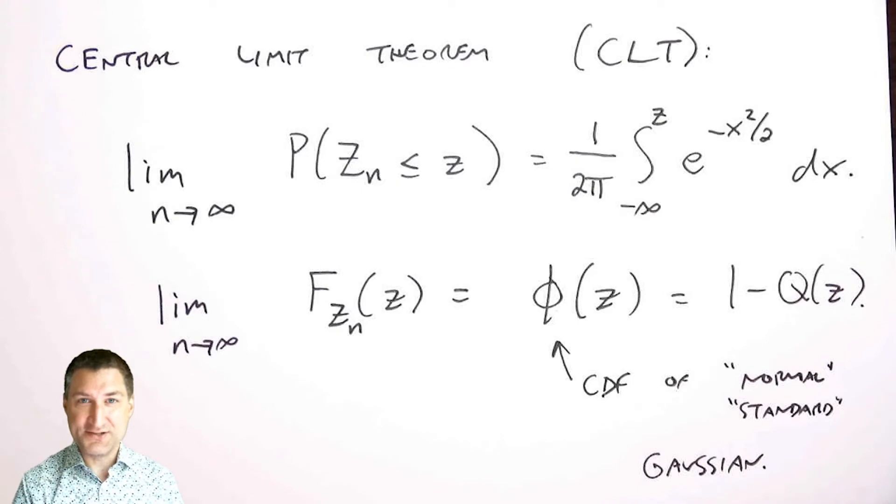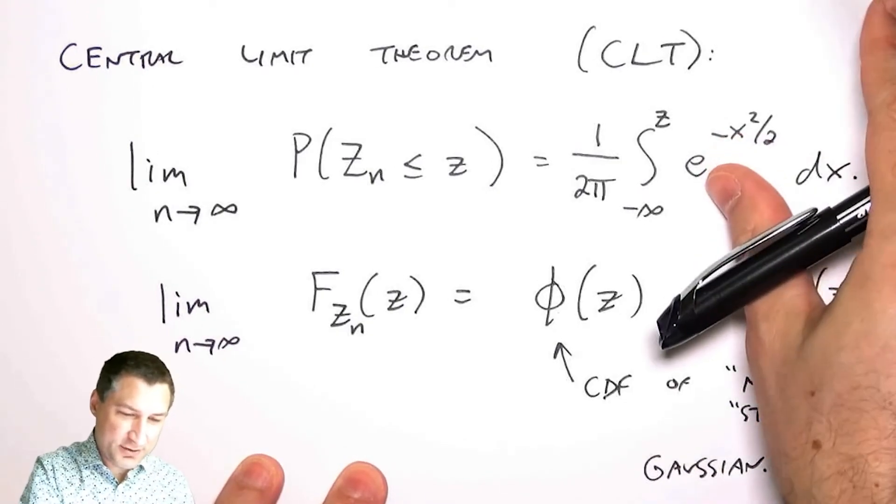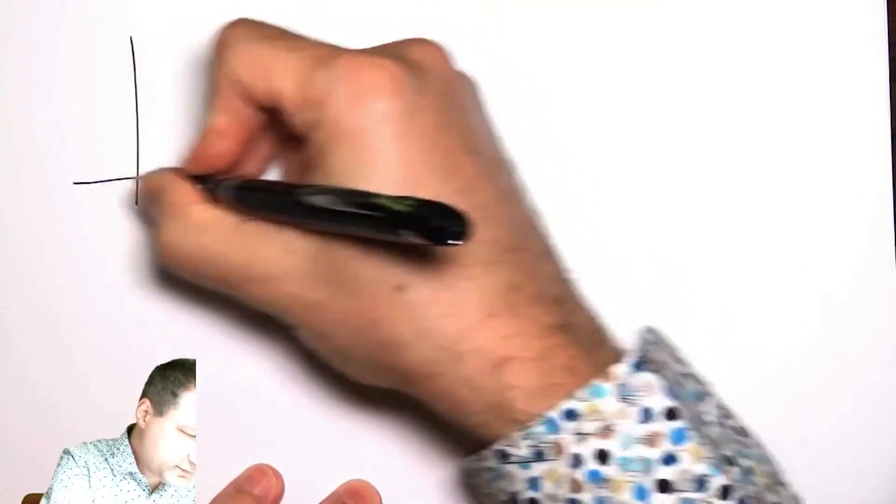The proof of this is a little bit advanced and it uses these characteristic functions, these Fourier transforms. You're just going to kind of take it on faith. The really cool thing about this is that the CDF of each of these random variables individually could look really weird.